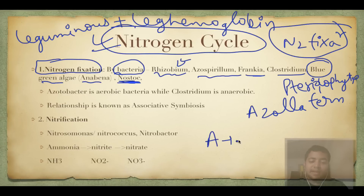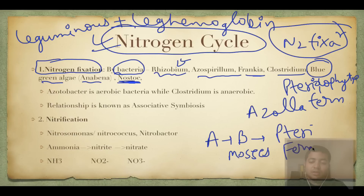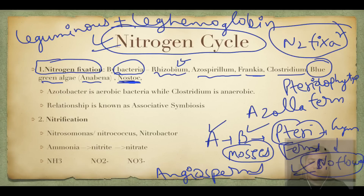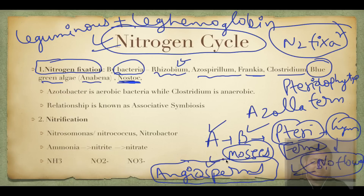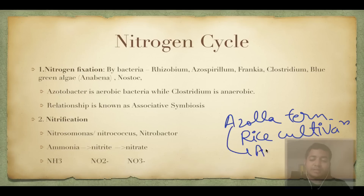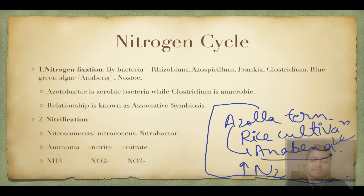Azolla is a fern which has been used in rice cultivation, tremendously increasing rice productivity because it harbors Anabaena, a blue-green algae that fixes nitrogen. This example might be asked in UPSC. Azotobacter is an aerobic bacteria requiring oxygen for survival. Clostridium dies in the presence of oxygen - it is the same bacterial genus that causes tetanus, food poisoning, and botulism. Botox is also derived from Clostridium and is used in facial muscles to give a younger look.